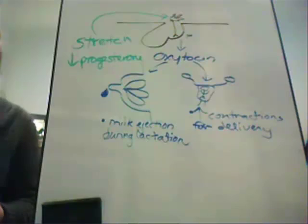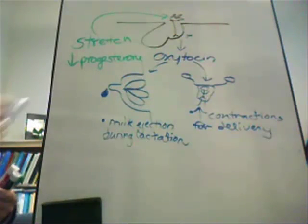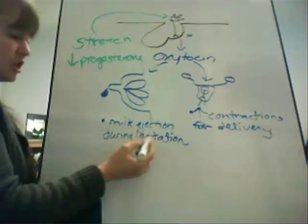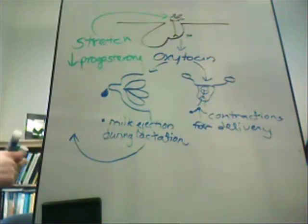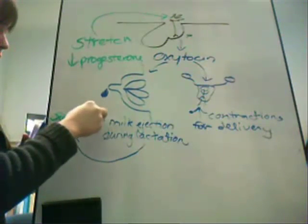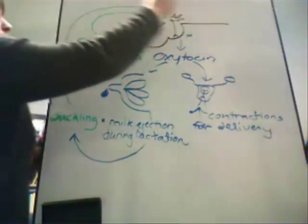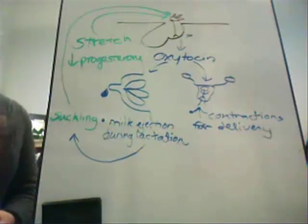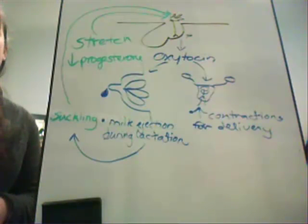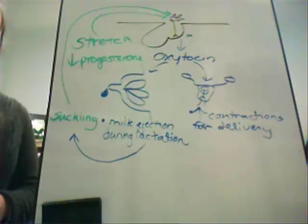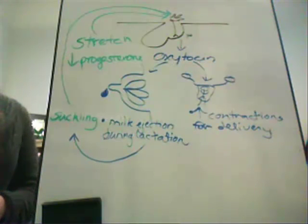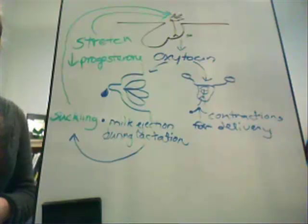This takes place post-partum. Milk ejection occurs in response to suckling — when suckling takes place, it triggers the hypothalamus to release oxytocin. As oxytocin is released into circulation, it causes the ejection of milk. Once oxytocin starts surging into the system, the breast will express milk regardless of whether the baby is still suckling, increasing the ease of feeding after the first initial draw.